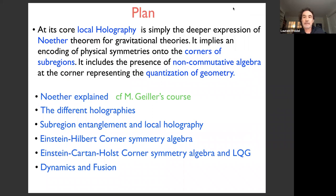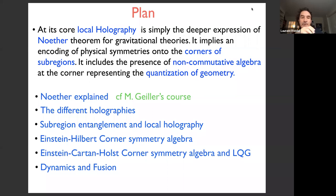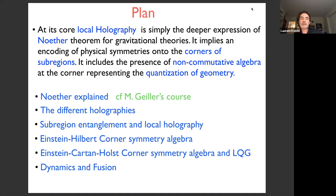At its core, holography in general and local holography in particular is simply the deeper expression of Noether's theorem for gravitational theories. What local holography implies is an encoding of physical symmetries onto the corners of sub-regions of spacetime, and it includes the presence of a non-commutative algebra at the corners that represents the true quantization of geometry.